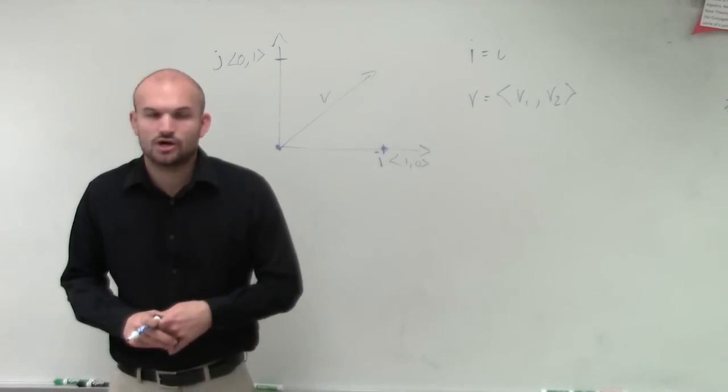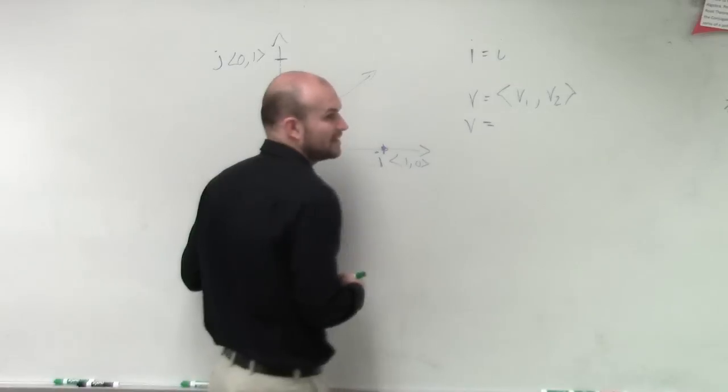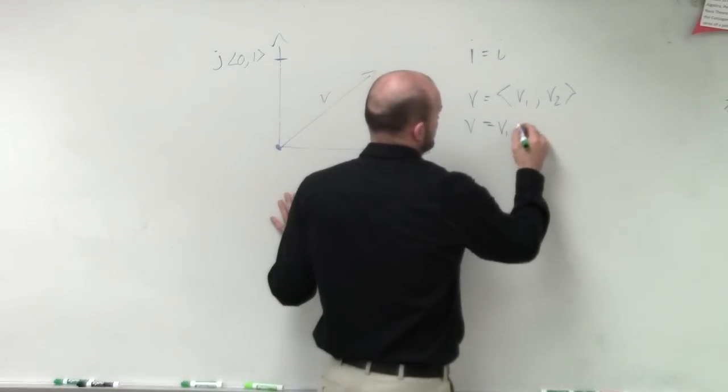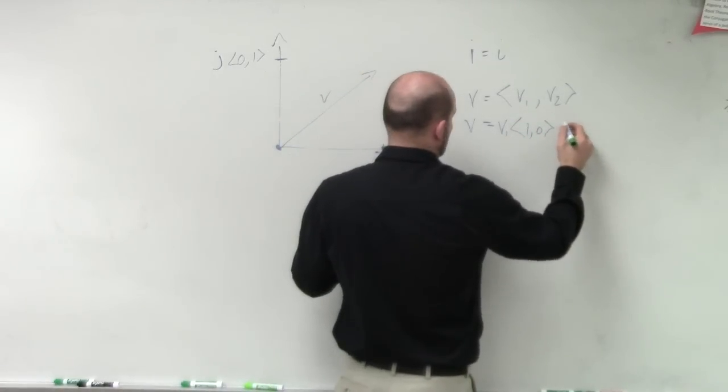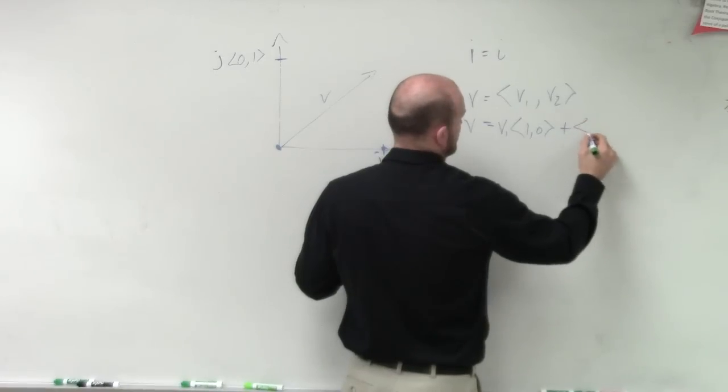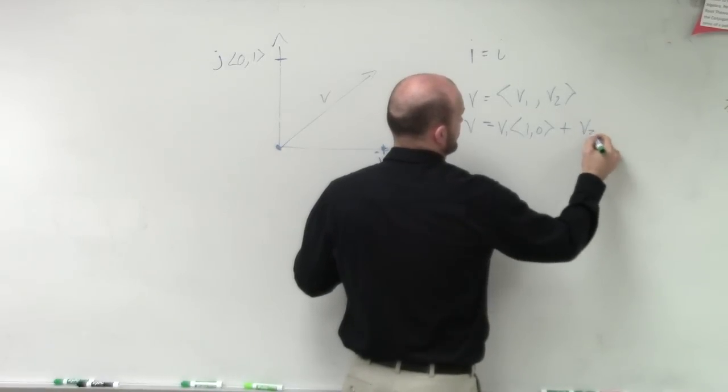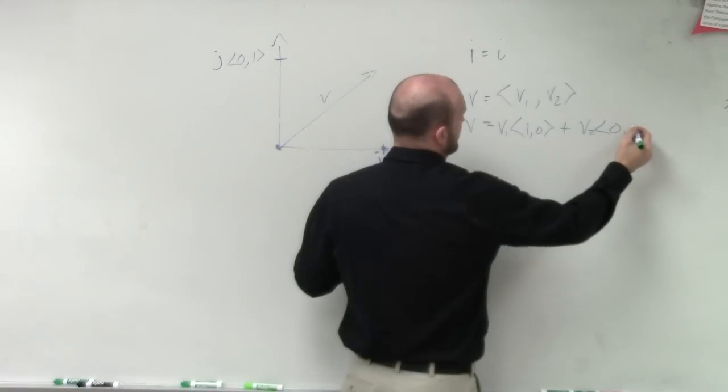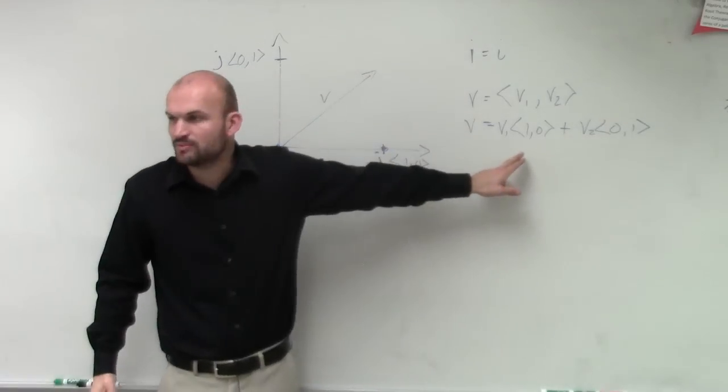What I want you guys to understand is that it also can be rewritten to look like this. v1 times 1 comma 0 plus v2 times 0 comma 1, all right? Now, notice, guys, if you're going to multiply this, if these are scalar multiples,